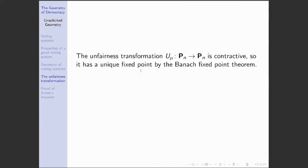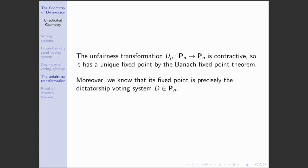Applying the Banach fixed point theorem to the unfairness transformation: we observed the unfairness transformation is contractive, so it has a unique fixed point. We also know that fixed point is precisely the dictatorship voting system. So if we construct any other fixed point for the unfairness transformation, it must also be a dictatorship. That's the key consequence of the Banach fixed point theorem that makes our proof of Arrow's theorem work.